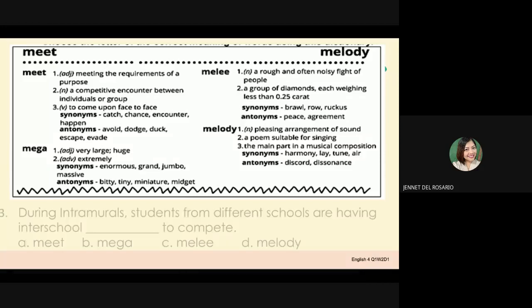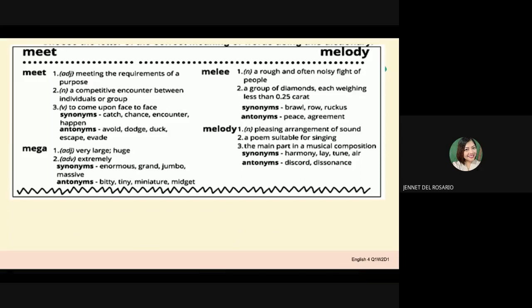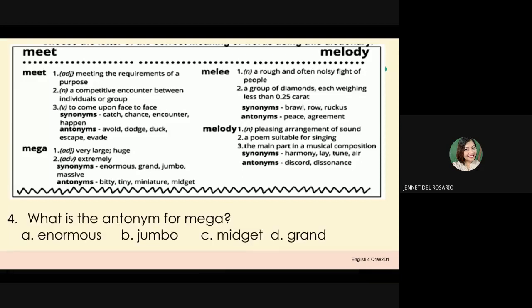Number 3: During intramurals, students from different schools are having interschool blank to compete. A. Meet. B. Mega. C. Milly. D. Melody. Number 4: What is the antonym for Mega? A. Enormous. B. Jumbo. C. Nijet. D. Grand.